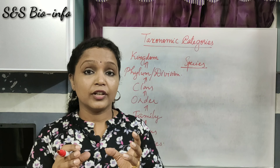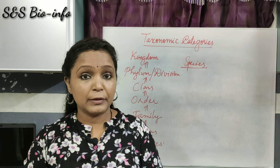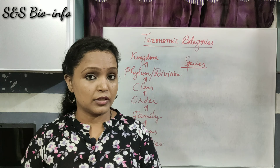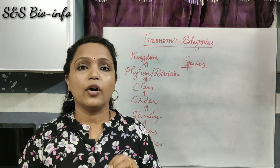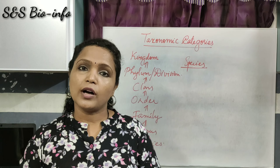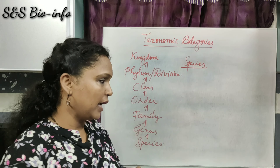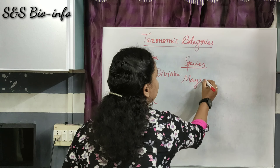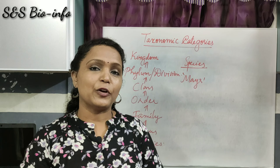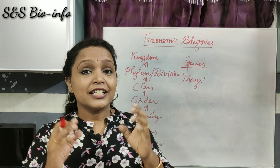Species is a group of related individuals which have more common fundamental features — that means similar characteristic features — and are able to interbreed among themselves to produce fertile offspring. This is the biological concept of species, proposed by the famous scientist Mayr, who is popularly called the Darwin of the 20th century.